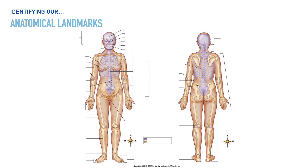Before we get started, I'd like you to notice the key or the legend towards the bottom of your screen. This legend identifies the two general categories or divisions of the skeleton. The first is what we refer to as the axial skeleton, and the second is what we refer to as the appendicular skeleton. The axial skeleton represents the bones within the midline of the body, shaded in a light purple color. The remaining portions are shaded in a yellowish color, and we refer to these areas as the appendicular skeleton.